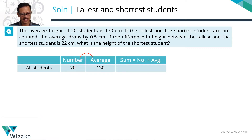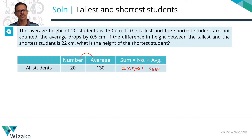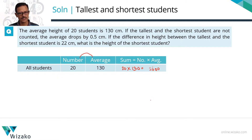Initially we started with 20 students and their average height is 130 cm. So the sum of their heights will be equal to the number 20 into the average 130. This is an easy number to calculate — it is equal to 2600. So the sum of the heights of all 20 students equals 2600 cm.